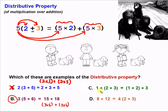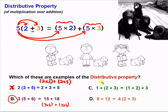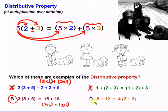Here's another one: one plus two plus three is equal to one plus two plus three. We have parentheses — doesn't that mean this is the distributive property? No, it doesn't. We're not distributing anything because there's no multiplication involved. This is addition, and so is this. This is not an example of the distributive property.